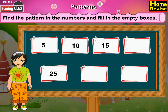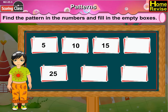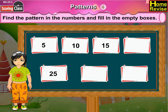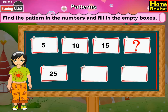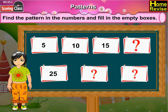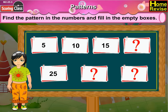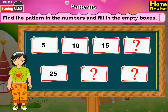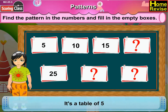Let us see the first strip. Here we have 5, then 10, 15, an empty box, 25, and 2 empty boxes. If you notice it carefully,